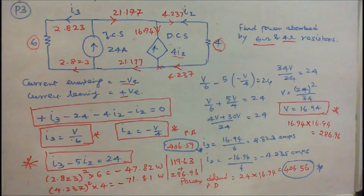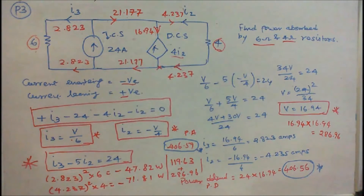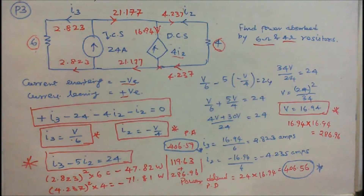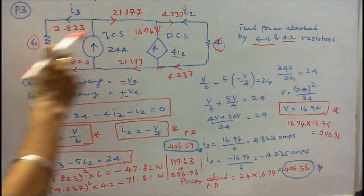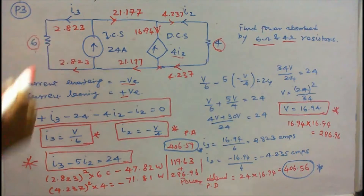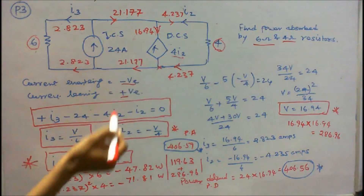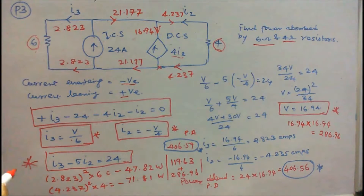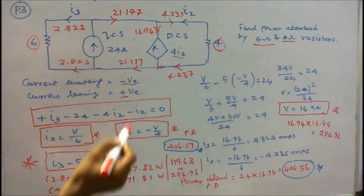Problem number 3: two resistors, 6 ohm and 4 ohm, one independent current source of 24 amps, and one dependent current source of 4·I2, connected as shown. The current directions are given: I3 and I2. The question is to find power absorbed by the 6 ohm and 4 ohm resistors. Assuming current entering is negative and leaving is positive: I3 - 24 - 4·I2 - I2 = 0, which simplifies to I3 - 5·I2 = 24. Also, I3 = V/6 and I2 = -V/4.